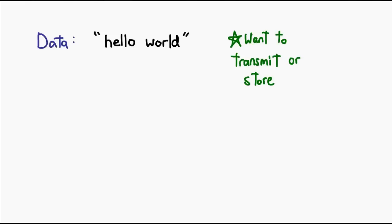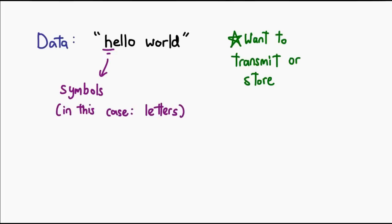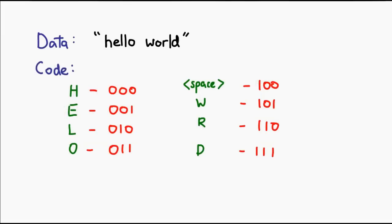Typically this data consists of a set of symbols, so to encode this data we create a code, which is a mapping of each symbol to a combination of bits. In a general case, this is where the story ends — we use the code to encode the symbols, transmit them, and then we can be on our merry way.